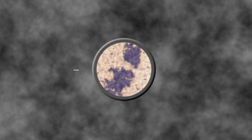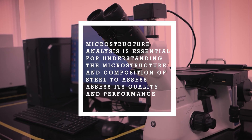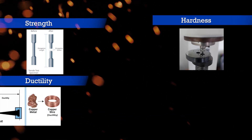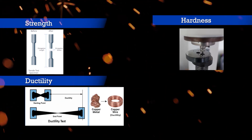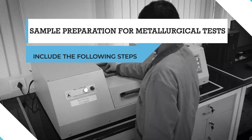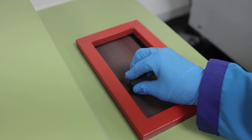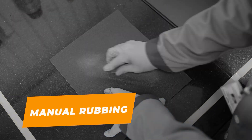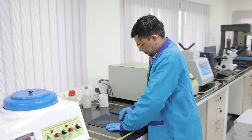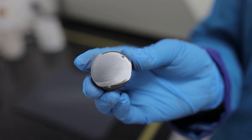Microstructure analysis is essential for understanding the microstructure and composition of grey cast iron to assess its quality and performance. Understanding microstructure helps evaluate mechanical properties such as strength, hardness, ductility, and the phases present, including grain sizes where applicable. Sample preparation for metallurgical analysis includes grinding — the sample is ground using progressively finer abrasive papers on a belt grinder, followed by manual rubbing on abrasive paper of various grit sizes. This step removes surface deformations from the cutting process and ensures a flat, smooth surface for further preparation.